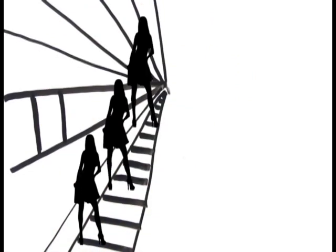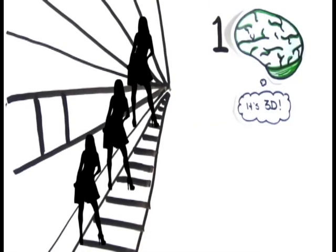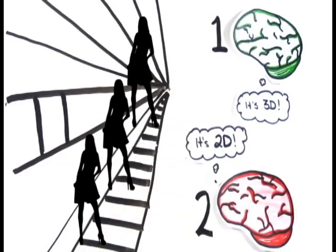A similar effect is seen here, which figure is the largest? Again, they're all the same size, but the suggestion of perspective and depth causes your system one to interpret the picture as three-dimensional, even though it's on a flat, two-dimensional surface. It's making quick work of the available information, and so your conscious system two, or slow thinking, must compensate after the fact and choose not to believe your intuition or instinct.